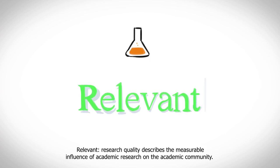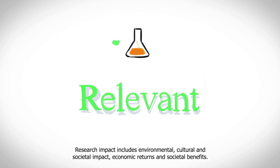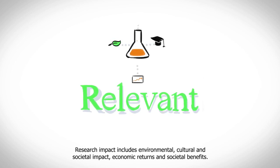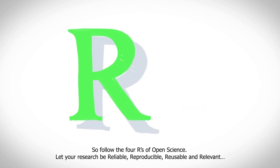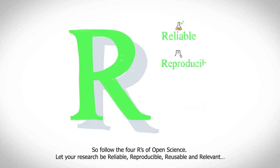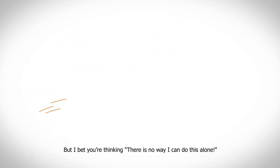Relevant: research quality describes the measurable influence of academic research on the academic community. Research impact includes environmental, cultural, and societal impact, economic returns, and societal benefits. So follow the four R's of open science: let your research be reliable, reproducible, reusable, and relevant.